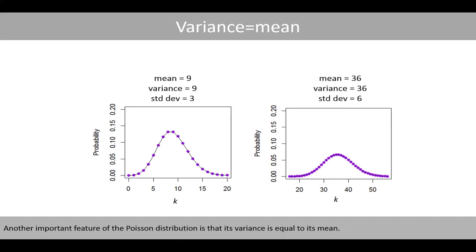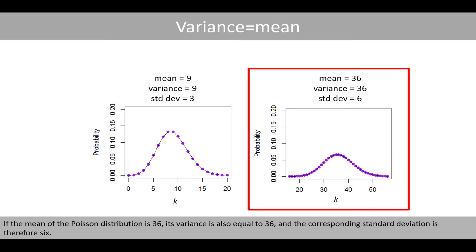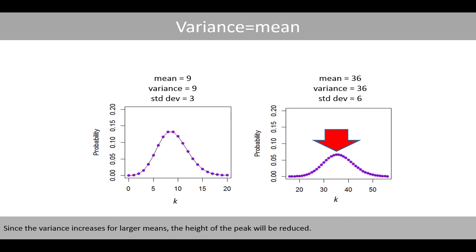Another important feature of the Poisson distribution is that its variance is equal to its mean. For example, if the mean of the Poisson distribution is 9, then its variance is also equal to 9, and the corresponding standard deviation is the square root of 9. And if the mean is 36, its variance is also equal to 36, and the corresponding standard deviation is therefore 6. Note that its spread becomes bigger when the mean gets bigger. Since the variance increases for larger means, the height of the peak will be reduced.